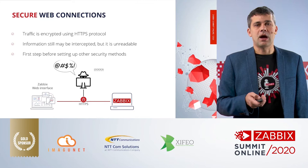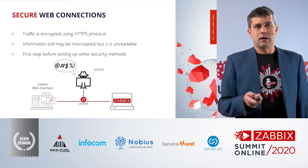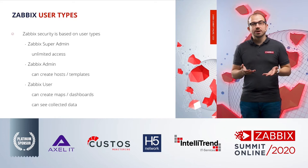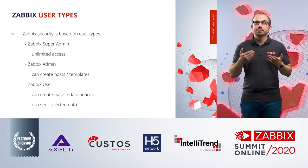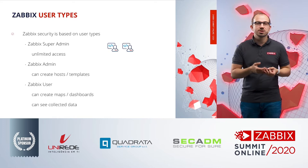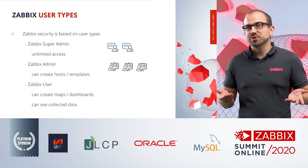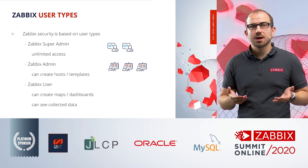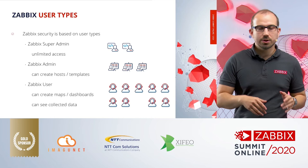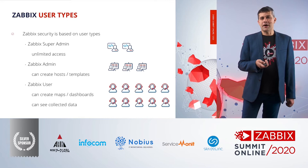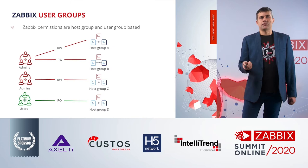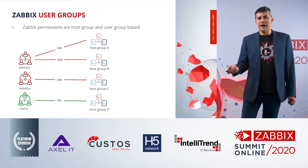Zabbix has three types of users. The main one is the Zabbix Super Admin, which has unlimited access — can change configuration and view all secrets. Then there is the Zabbix Admin, who can change some configuration and view some information. Finally, Zabbix Users can only view data, not configuration. Users can be assigned to groups with read-write or read-only access, and those permissions can be extended as needed.